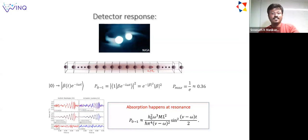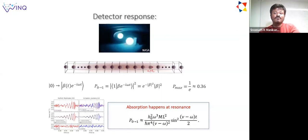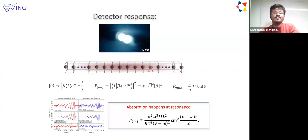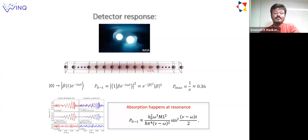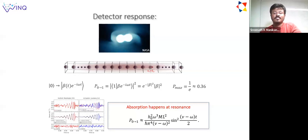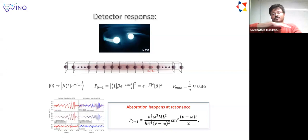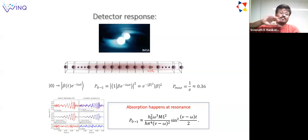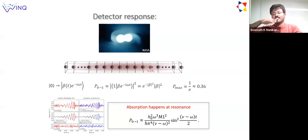Another thing I want to highlight is the detector response. In the photoelectric effect, the detector response is important—it's not the intensity of the wave that matters, but the frequency at which the onset of absorption happens. Here we clearly see that the probability of excitation goes like a sinc function—a sharp resonant detector. If a gravitational wave is chirping through, you don't see much response below or above the resonant frequency, but you see a sharp transition at the resonant frequency of the bar detector.